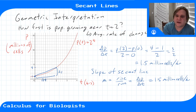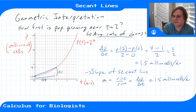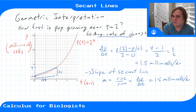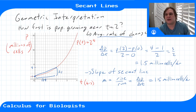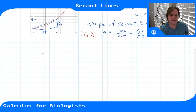The geometric interpretation of the average rate of change between two points is the slope of the secant line between those two points. If we really want to know how fast the population is growing near time t equals two, we should look a little bit closer to get a better idea.